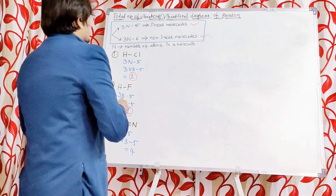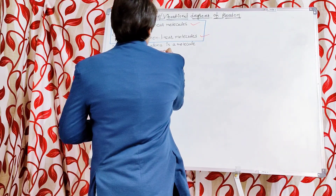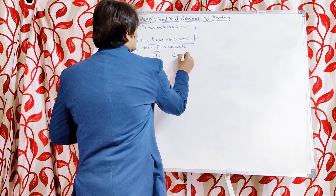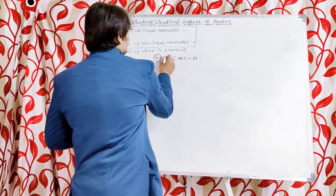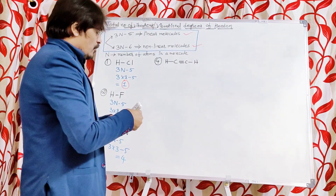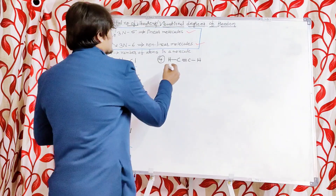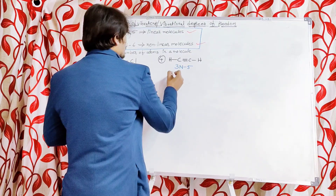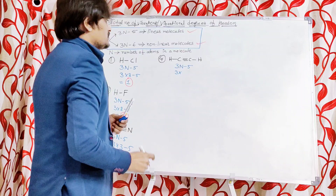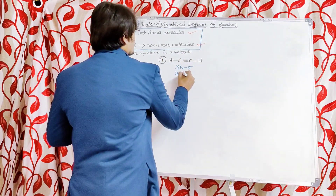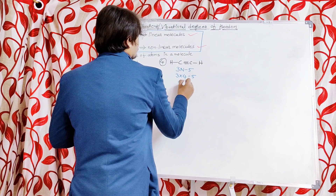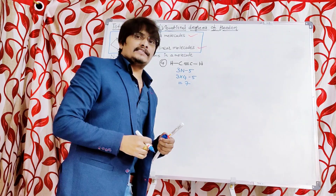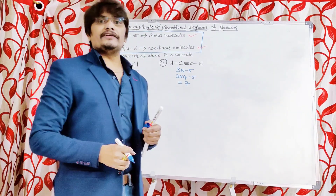Let's take the fourth example: acetylene. The structure of acetylene is H–C≡C–H. Acetylene is also a linear molecule, so the same formula applies: 3N minus 5. The number of atoms is 4 — so 3 into 4 minus 5 equals 12 minus 5 equals 7. The total number of vibrations possible in acetylene is 7, whenever it is irradiated with IR radiation.